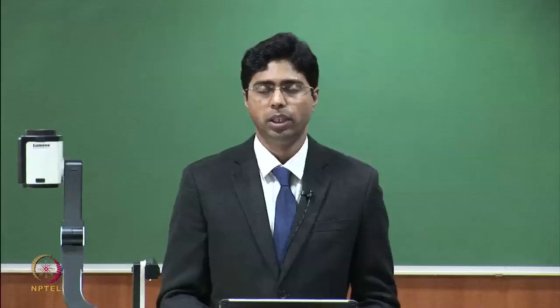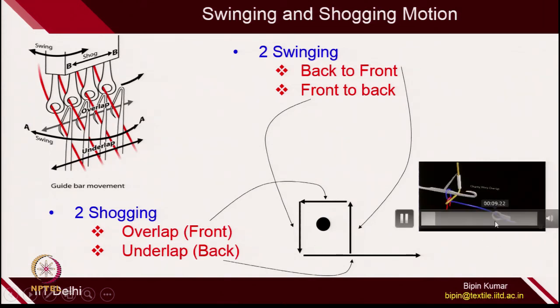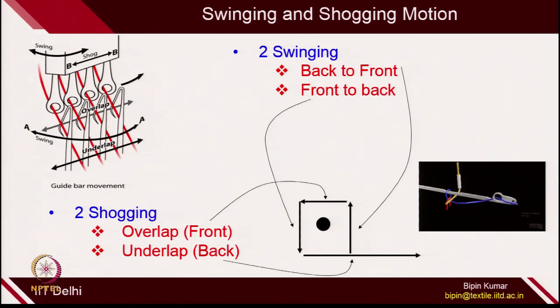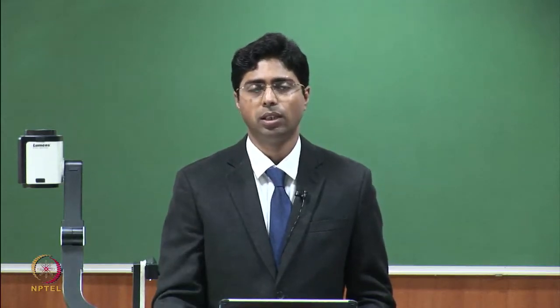If you see this particular animation: first swinging, then overlap, and another swinging is described here. The guide is swinging, then overlap, then the second swinging. After that, the guide moves to the back side because it has to change the needle location. This is how swinging and shogging motion is important. I am going to show you many types of fabric samples where the structure is only different because of the movement of underlap and overlap. Swinging motion remains the same in almost all fabric structures. The only difference in different fabric structures comes because of the overlap and underlap movement.